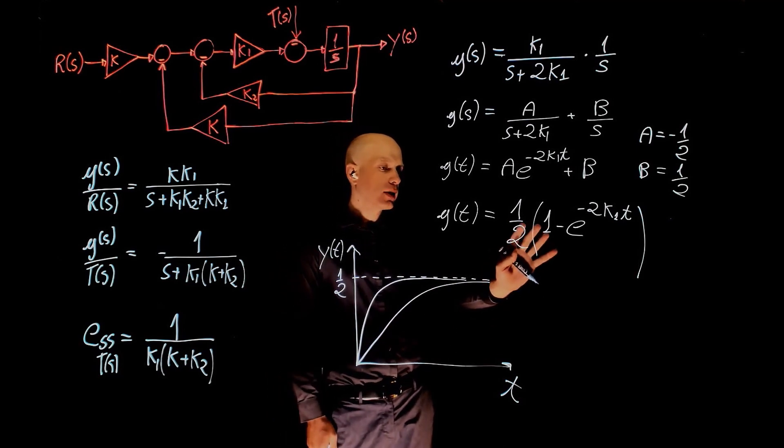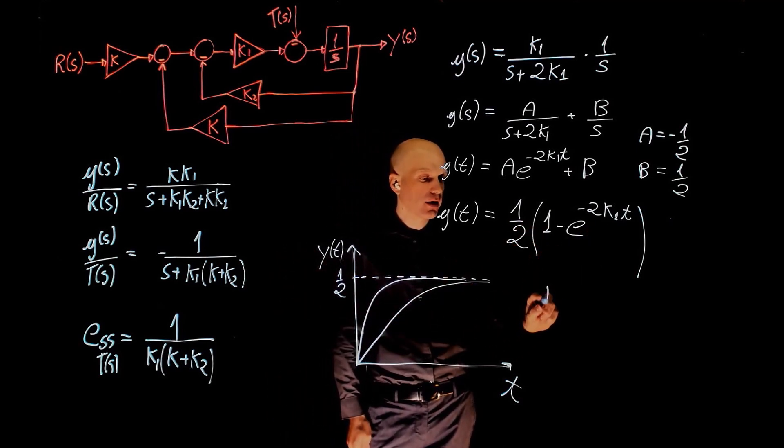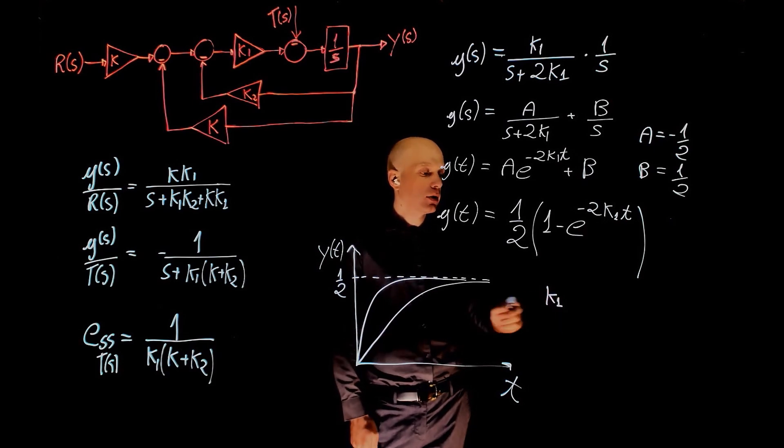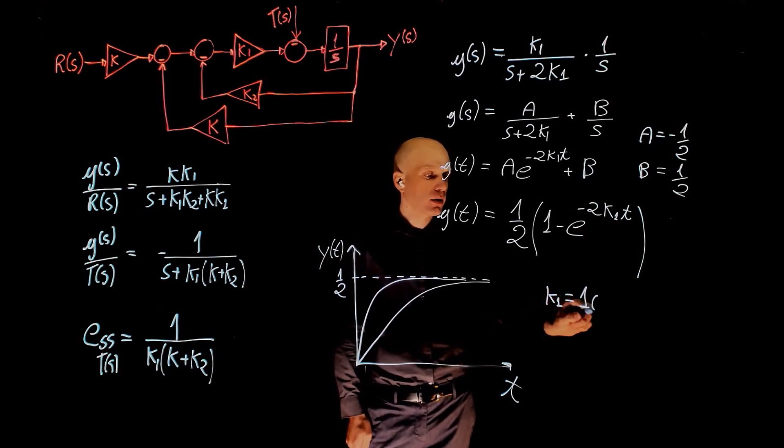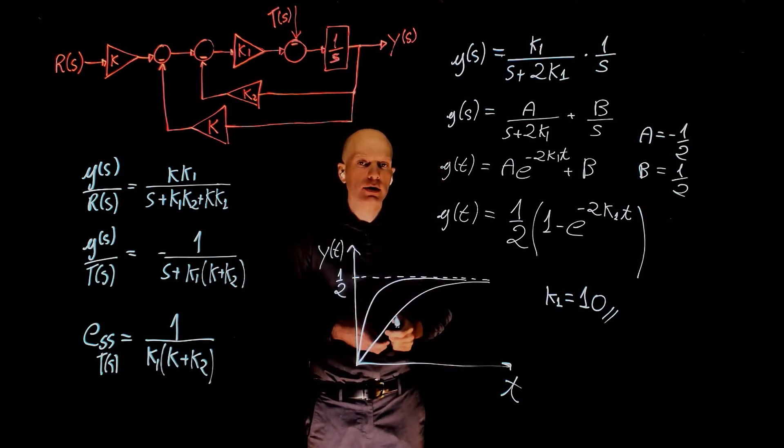Which will provide the faster response compared to the previous one. So in order to maximize the response here, we can set k1 to the highest value. And according to the problem, the highest value is 10, and this is what we should select for the fastest response.